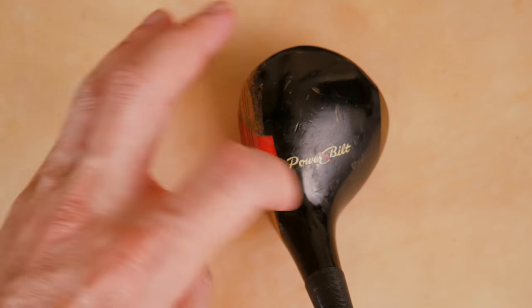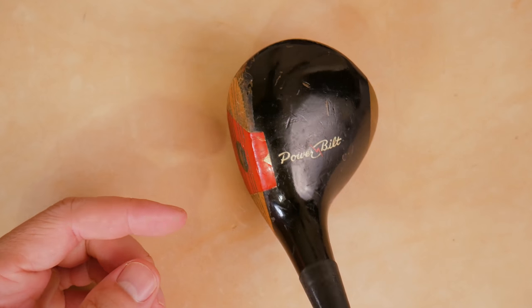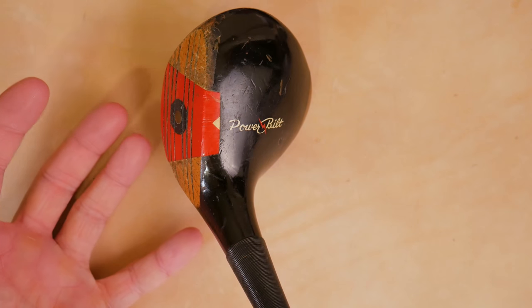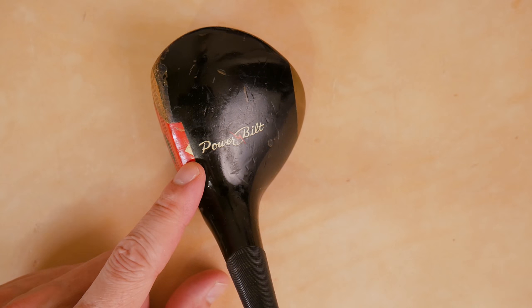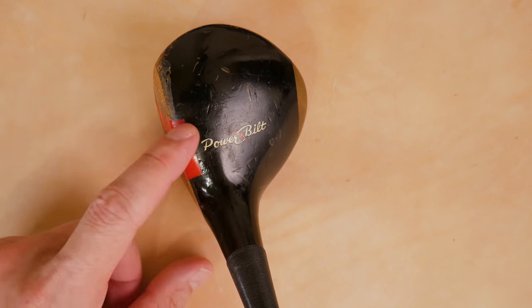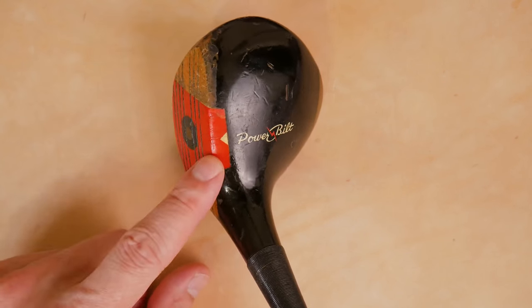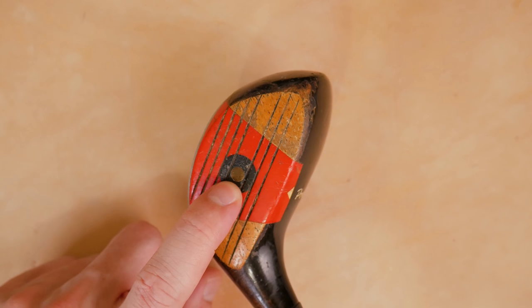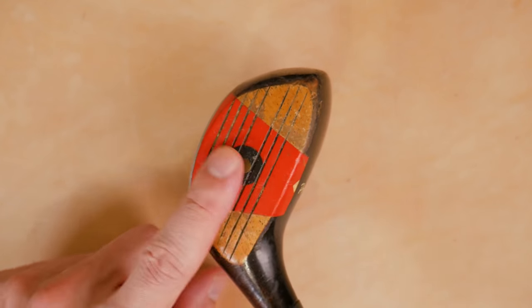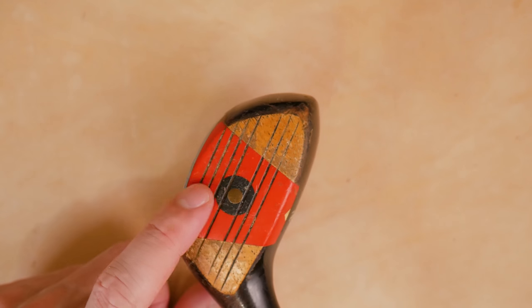Real quick, we're going to talk about some of the identification features on the club, and then I'm going to move through the condition of the club and my thoughts. Powerbuilt right here, decal along the top line. There's a little arrow right here, they're almost lined up. Red face insert with a bullseye pattern. This is a slotless screw around a little black dot here on the face insert.